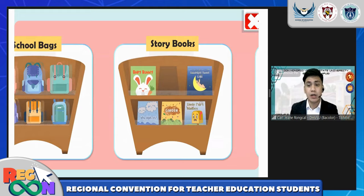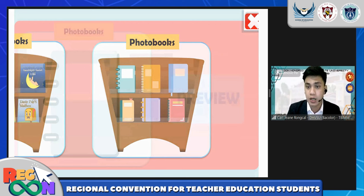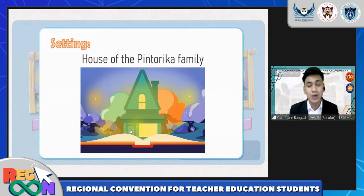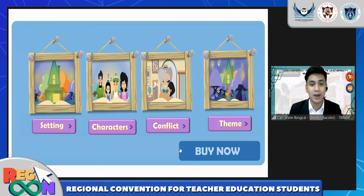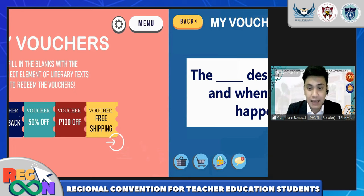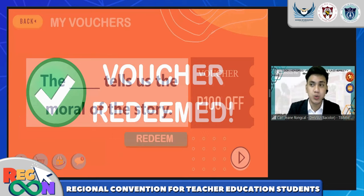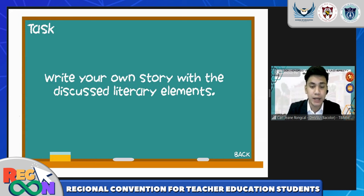For the generalization, there is another product page with images or symbols from the story as special products of the store. A photo album serves as the lesson review, with each element hyperlinked for further explanation. To check out these products, there are available vouchers — these serve as the student evaluation, with a set of questions asked before redeeming them. Before closing the online store, students are given an assignment: creating their own story to test both their knowledge and creativity.